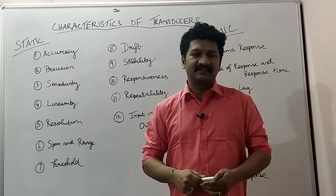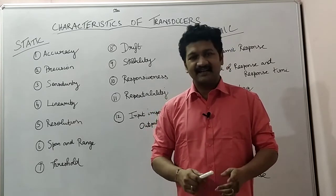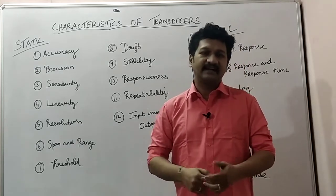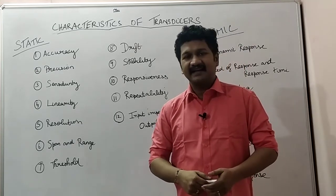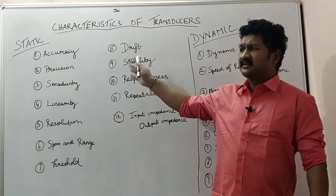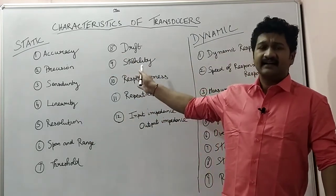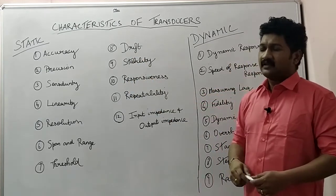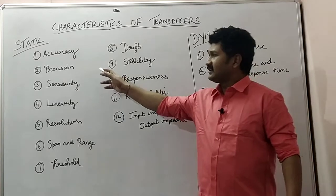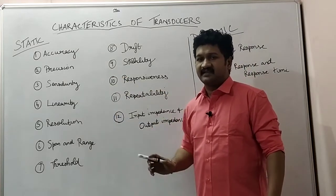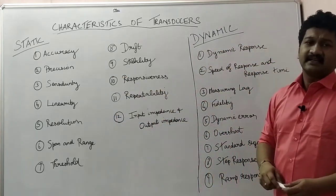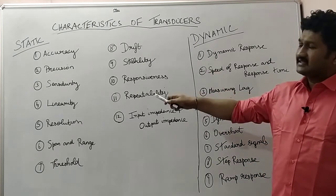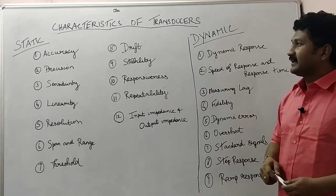There are two types of characteristics: static characteristics and dynamic characteristics. In static characteristics, it is a set of defined criteria where the measured quantities do not vary with time. In dynamic characteristics, the measured quantities vary with time. We will see in detail what are the static characteristics and what are the dynamic characteristics.